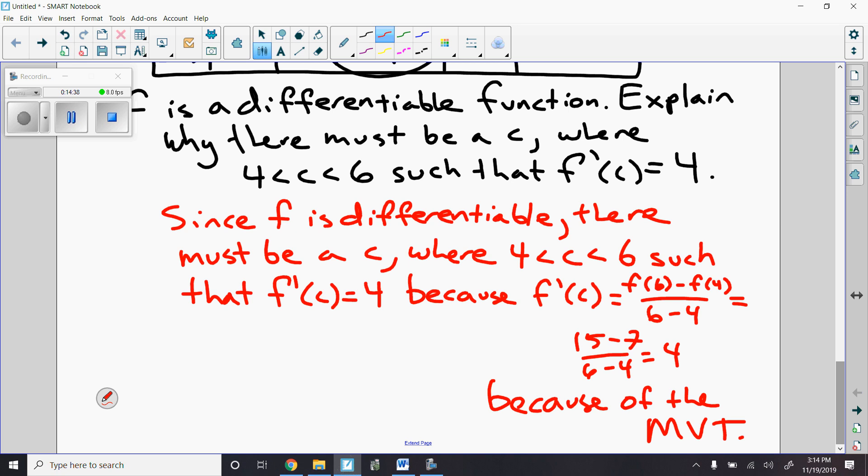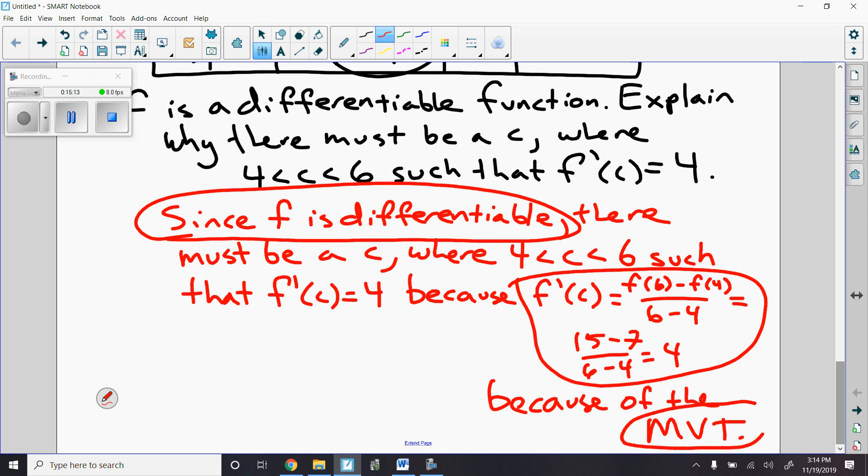Okay, so here's what I'm looking for. Number one, you must state that the function is differentiable. Number two, you must show me at least one difference quotient, F prime of C. Right, you can go straight from F of 6 minus F of 4 over 6 minus 4. You can go straight from that to 4, or just take your time and go through each step. You can start with 15 minus 7 over 6 minus 4, and we must have the MVT in there. Those are the things I'm looking for, and I just use the wording of the question to help fill in the gaps.